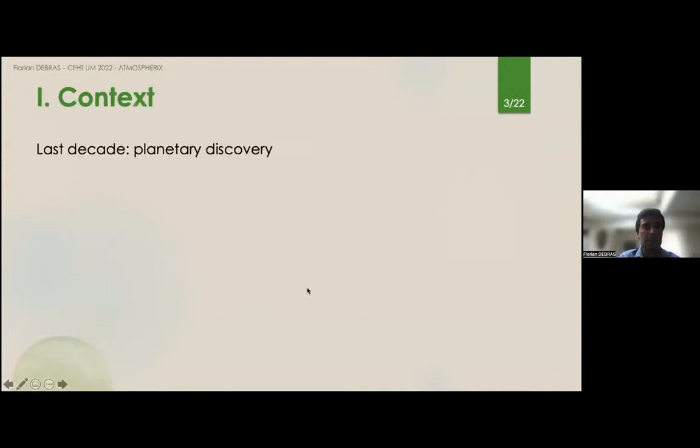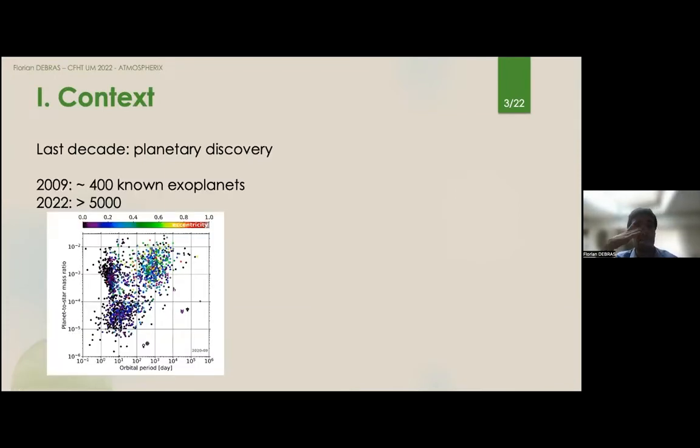Last decade was really the decade of planetary discovery. In 2009 we knew 4,000 exoplanets and in 2022 we have reached numbers higher than 5,000. This is an example of their mass function of the orbital period and eccentricity in color, and what you see is that they span a very huge range of different physical conditions.